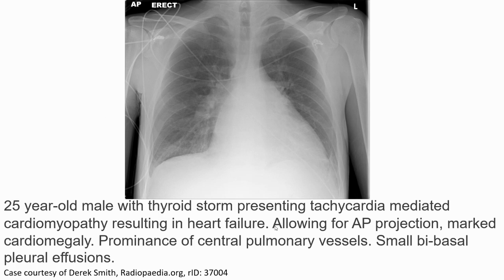The first case is a 25-year-old male with tachycardia-mediated cardiomyopathy resulting in heart failure. The X-rays show marked cardiomegaly, prominent central pulmonary vessels, small bilateral basal pleural effusion. These are the features we can find in chest X-ray that indicate cardiac failure.